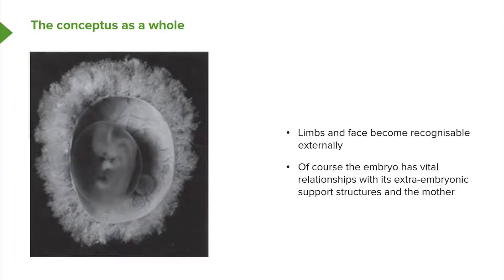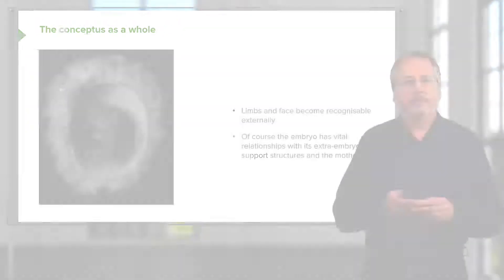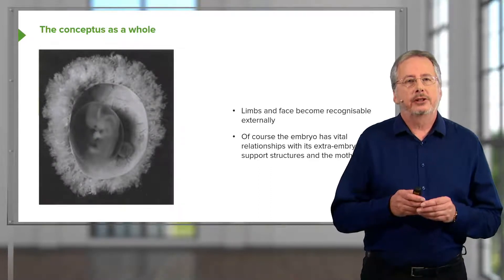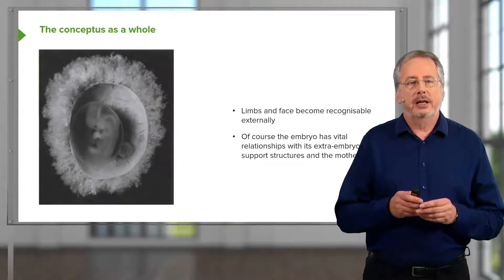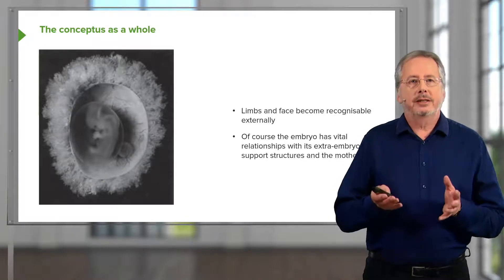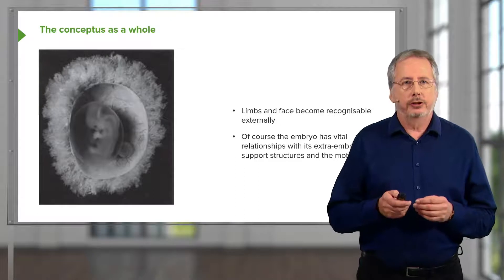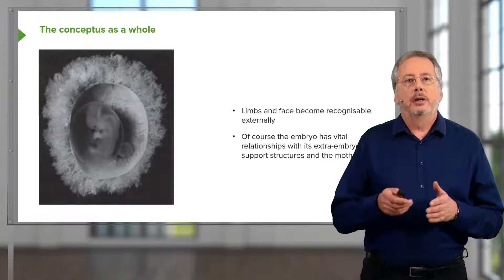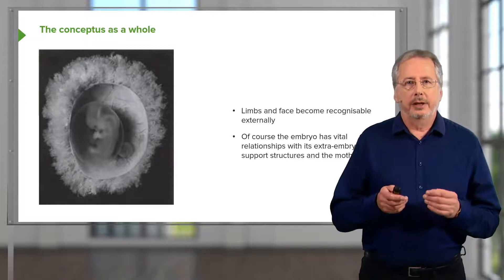Looking at the whole structure that's been conceived — the conceptus as a whole — we can see the embryo inside its chorionic cavity, surrounded by its amniotic membrane. The little sac to the side of the embryo is the yolk sac as it steadily diminishes in relative size. All around, the cloudy structures are the developing placenta engaging with the uterine tissue, and the limb buds in this slightly later picture are beginning to take on more recognisable form as the arm and leg of the human.